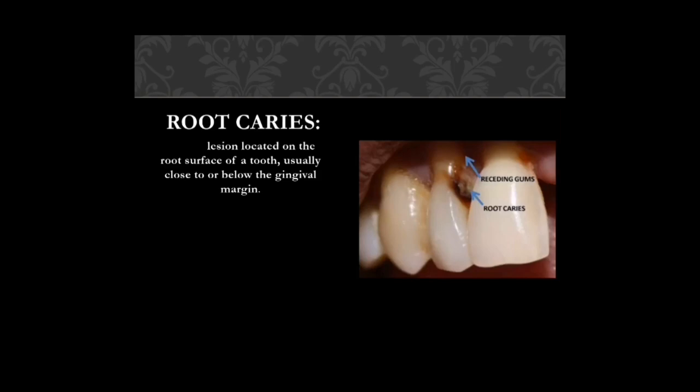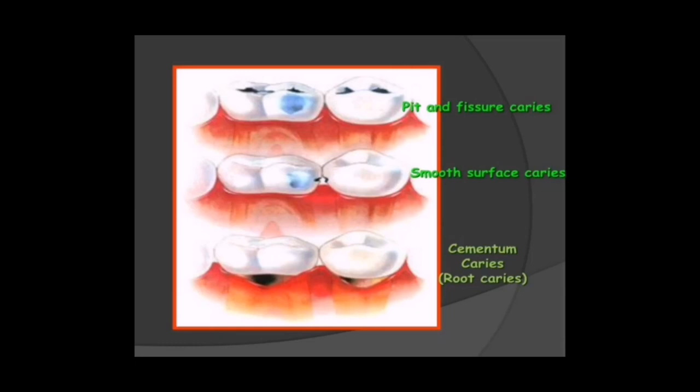Root caries occur in adults; lesions are located on the root surface of the tooth, usually close to or below the gingival margin. In normal cases there is no root caries, but if gingival recession takes place and root surfaces are exposed, root caries can occur. A diagrammatic presentation shows pits and fissure caries, smooth surface caries, and cementum caries, also known as root caries.